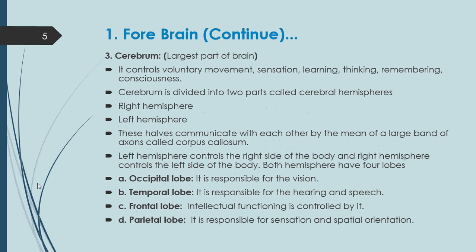Now we are going to discuss part number three: cerebrum. In one line, the definition is: cerebrum is the largest part of the brain. It controls voluntary movement, sensation, learning, thinking, remembering or memorizing, and consciousness. These are all the responsibilities and controls of the cerebrum.